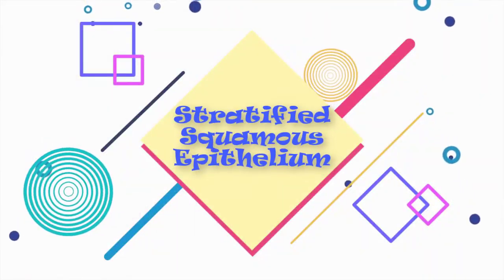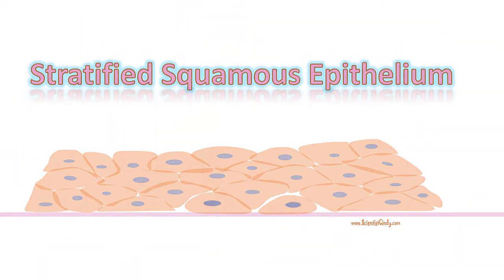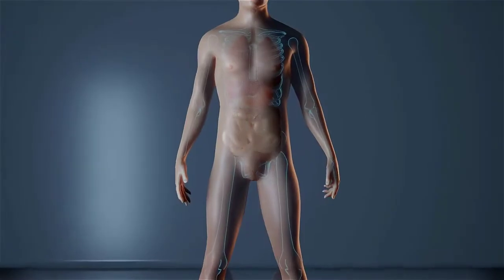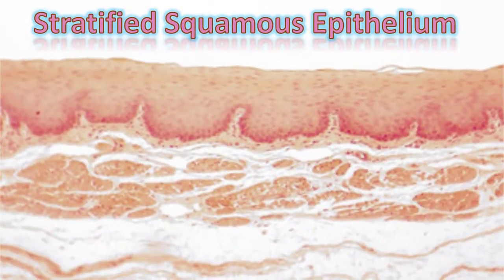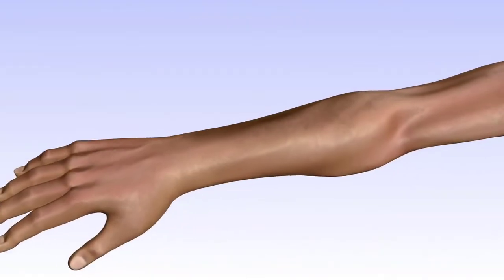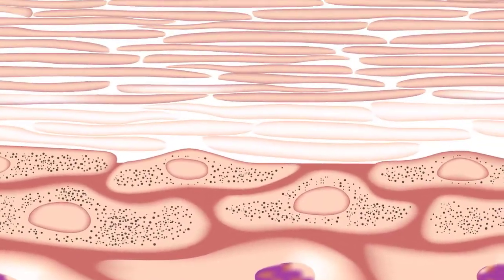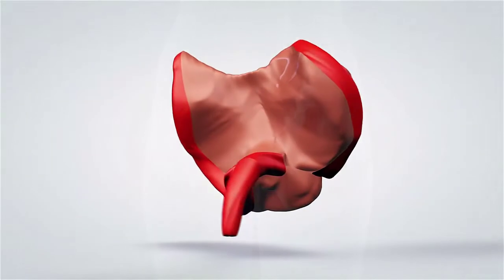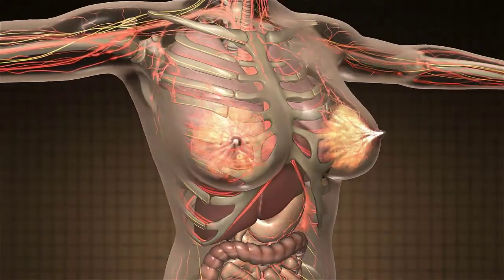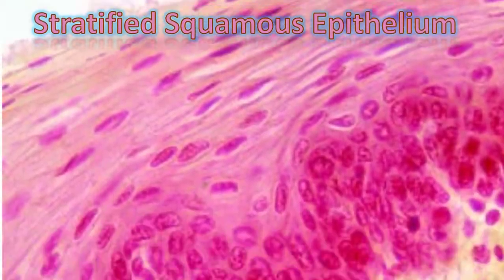Stratified squamous epithelium lines the inner and outer surfaces of the body. When this tissue lies on inner surfaces of the body or in orifices of the body, it is usually not keratinized. Keratinized epithelium is composed of numerous layers of dead squamous skin cells called corneocytes. Moist areas such as the oral cavity, the nasal cavity, the rectum, and the vagina don't need this added protection from desiccation, and therefore tend not to be keratinized.